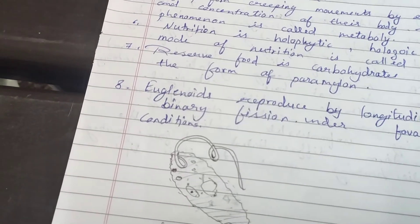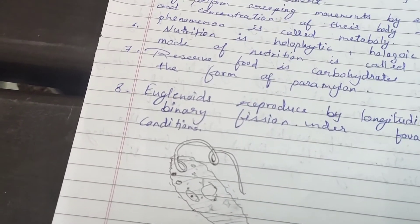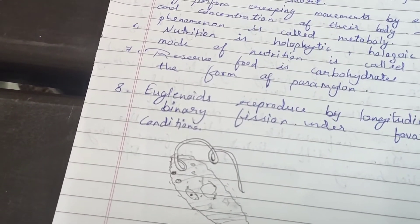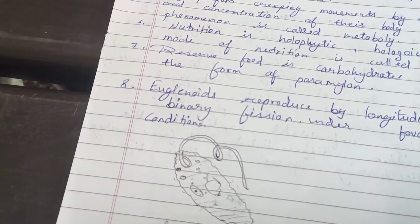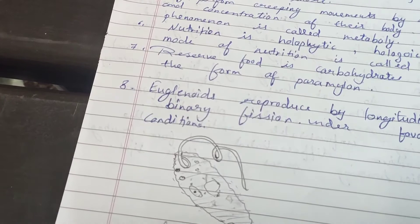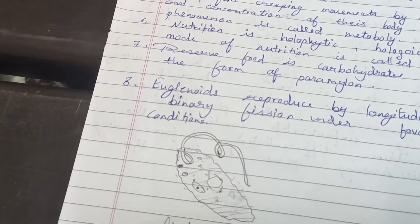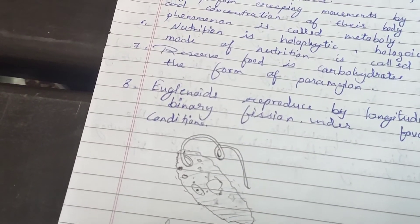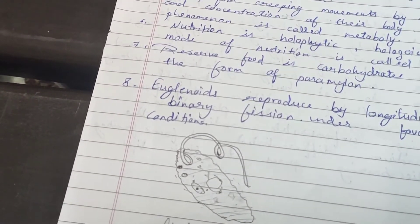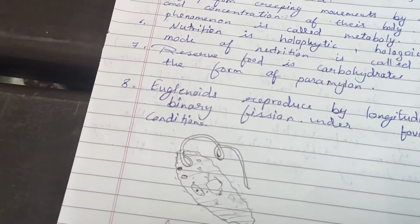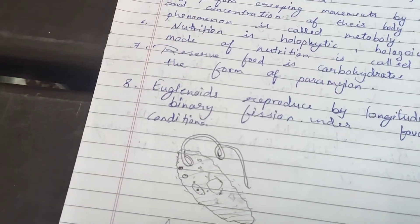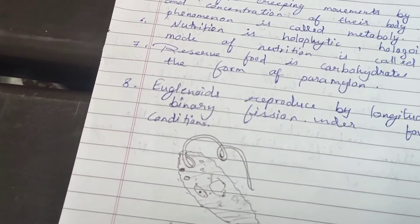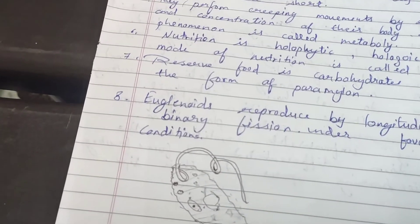Examples of euglenoids include Euglena, Eutreptia, and Phacus. These are all species which are euglenoids.